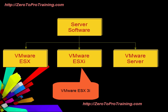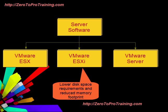VMware ESXi was formerly called VMware ESX 3i. It is quite similar to ESX. The main difference is that the service console is removed and replaced with a minimal BusyBox installation. Disk space requirements are lower than ESX, and memory footprint is reduced as well. ESXi is intended to be run from flash disks and servers, though it can be run from normal disks as well.